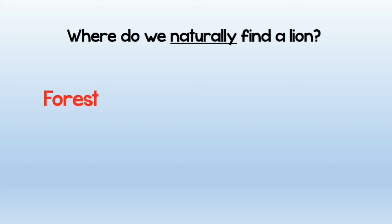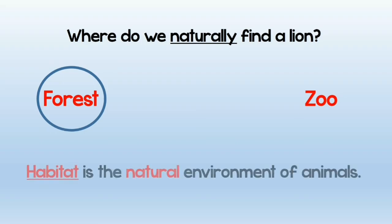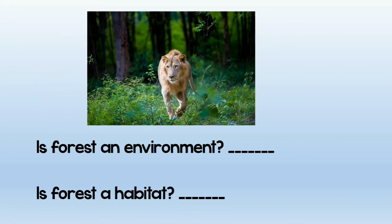This is an important question — where do we naturally find the lion? Do we find it in the forest or in the zoo? Of course, we find it in the forest naturally, because that's where God created the lion. A new word comes up: habitat. Habitat is the natural environment of an animal — in other words, that's where God created this animal. Now let's ask questions. Is forest an environment? It's a place around the animal, so yes, it is an environment. Is forest a habitat? It is the natural place where the lion exists, so yes, it is a habitat.